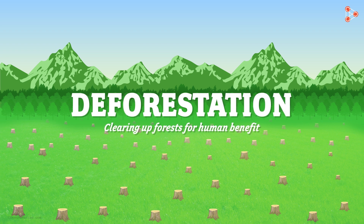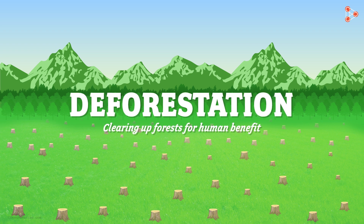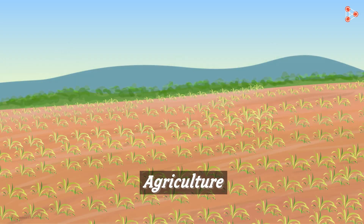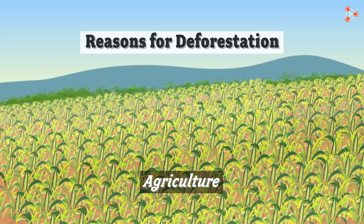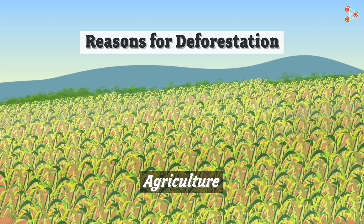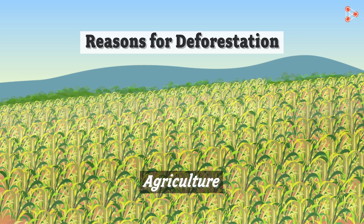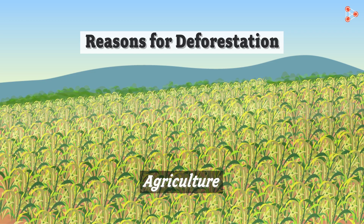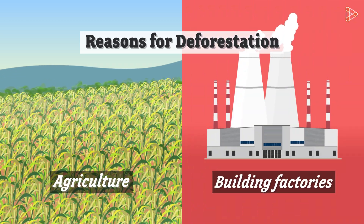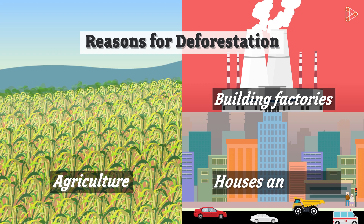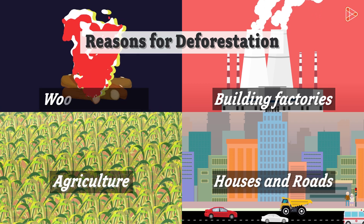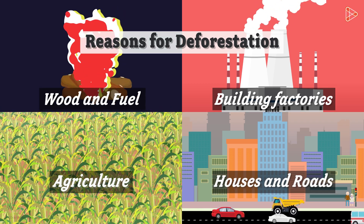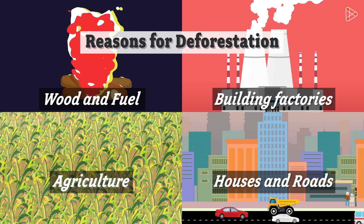Can you name a few reasons why man clears up forest lands? Agriculture — we clear land to bring more land under cultivation. Other reasons include building factories, houses, and roads. And what about cutting trees for wooden fuel? Isn't that another reason? Of course it is!